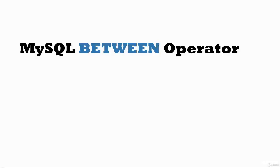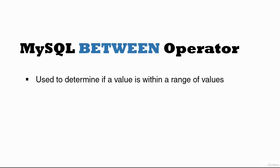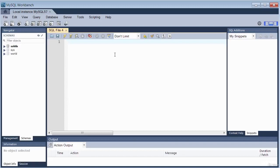Hello and welcome to this lecture. In this lecture, you will learn how to use the MySQL BETWEEN operator. The MySQL BETWEEN operator is used to determine whether a value is in a range of values. Let's look at an example. I have MySQL Workbench open and connected to the database. The schema I'm going to use is the Sakila sample database.